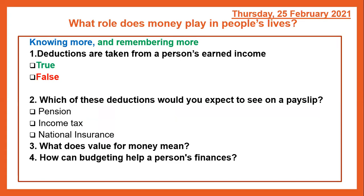Before we begin, we're going to be seeking to answer the question: what role does money play in people's lives? But first we need to complete our knowing more and remembering more. Number one: deductions are taken from a person's earned income — true or false? Number two: which of these deductions would you expect to see on a payslip — pension, income tax, or national insurance? Number three: what does value for money mean? And number four: how can budgeting help a person's finances? Pause here to complete your knowing more, remembering more.